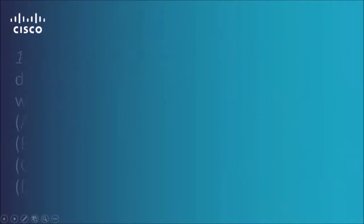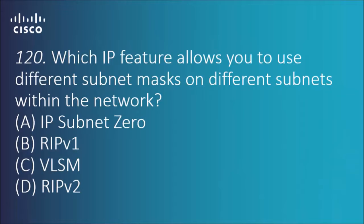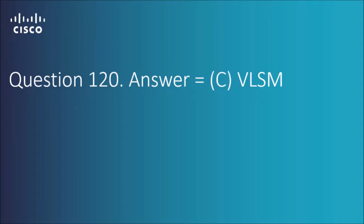Question 120: Which IP feature allows you to use different subnet masks on different subnets within the network? I've just said exactly what it is - the answer is C, VLSM. The Variable Length Subnet Mask feature allows us to use different subnet masks for different subnets within an organization.